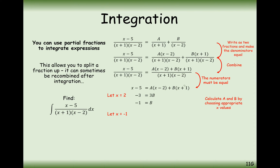Substituting in x equals minus 1 — that's the value that will make the (x plus 1) bracket equal 0. So it's going to be minus 6 equals minus 3A. Therefore A must equal 2.